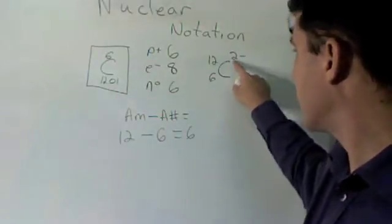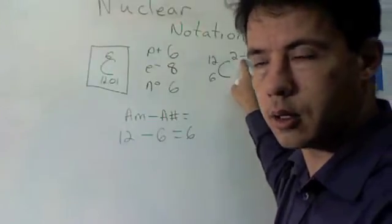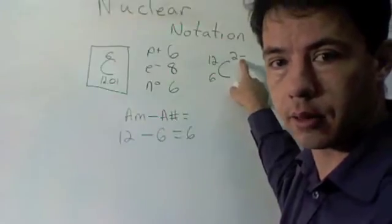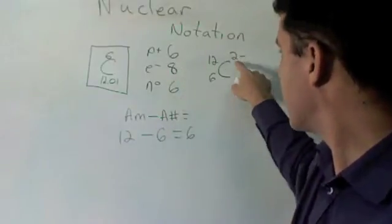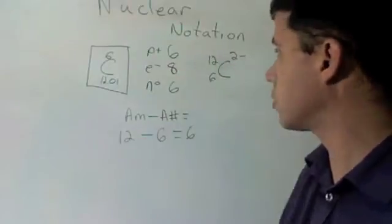But we're going to start writing it with the negative after the number. And that's to help us not be confused later with the math. So it has a two negative charge, because it has two extra electrons.